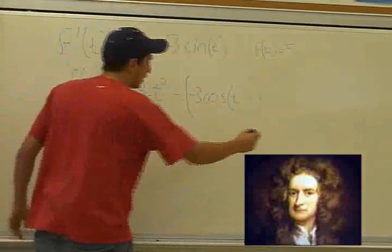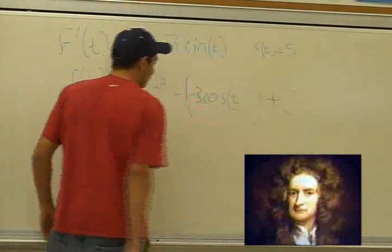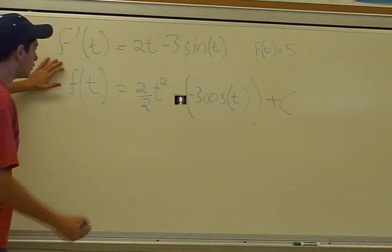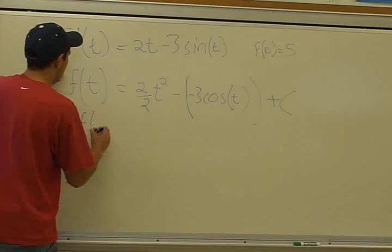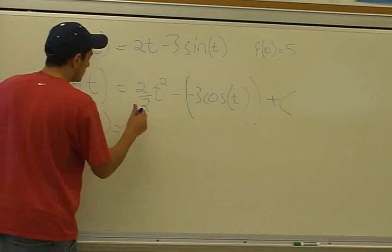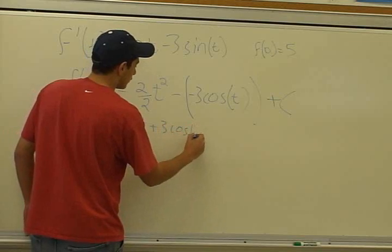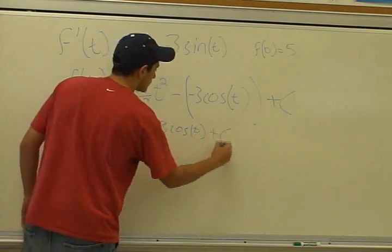So that's it. And as always, with antiderivatives, you've got to add the c at the end. Here we go. And then you can simplify this if you'd like. So f of t would be t squared plus 3 cosine of t plus c.